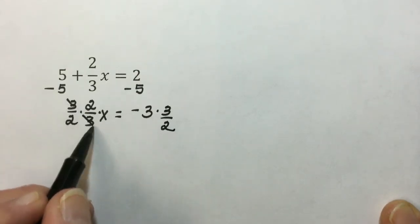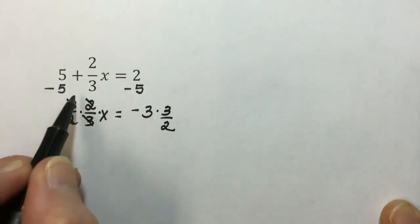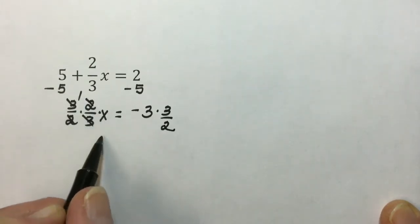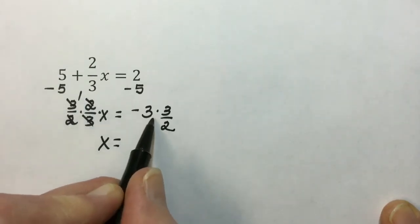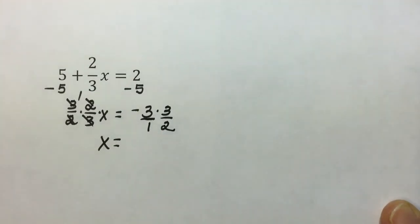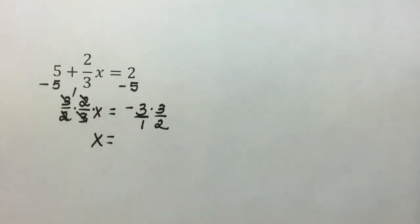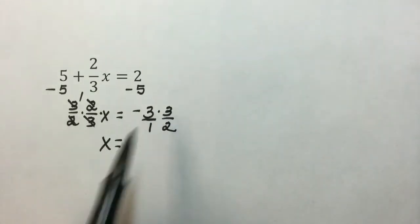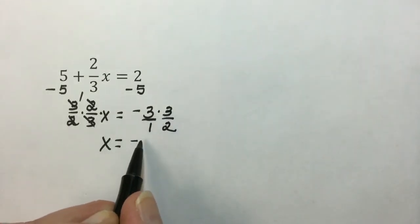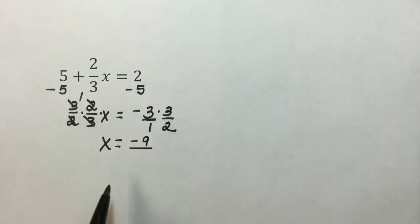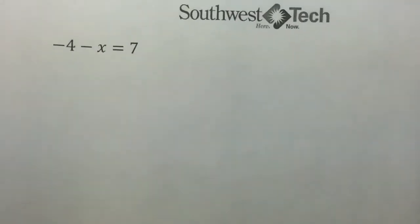The 3 over 3 cancels out. The 2 over 2 cancels out, leaving a 1 times x or x. And to simplify our fractions, the negative 3 has a denominator of 1. Multiplying fractions together, we multiply the numerators and use that product as the new numerator. A negative times a positive is a negative. And multiply the denominators using that product as the new denominator.